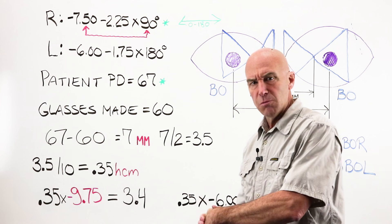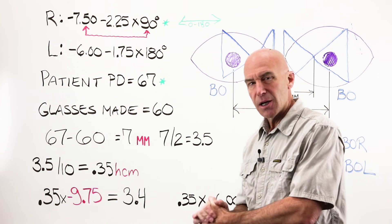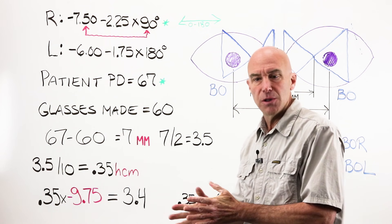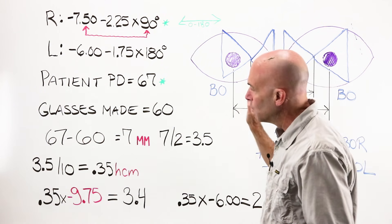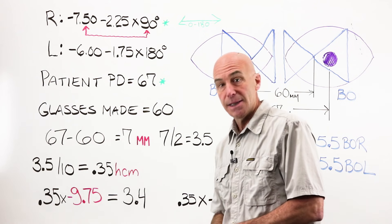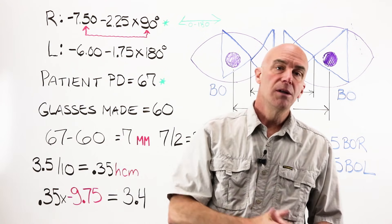Example number three for basic Prentice's formula problems. We may do more like this next time around. I doubt it. I think we'll probably jump into the 30-45-60 rule and powers and oblique meridians formula since it all works off the same idea. See you next week.